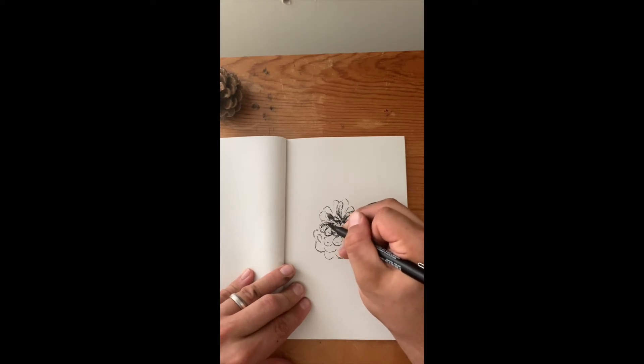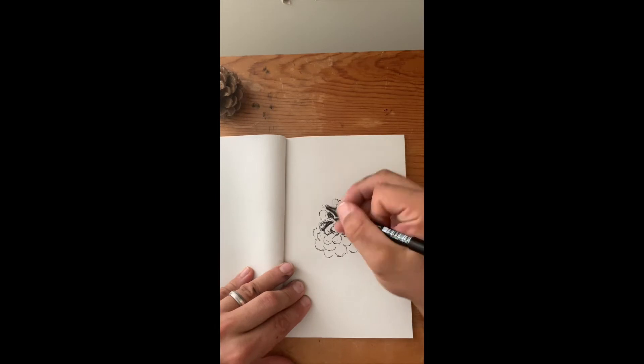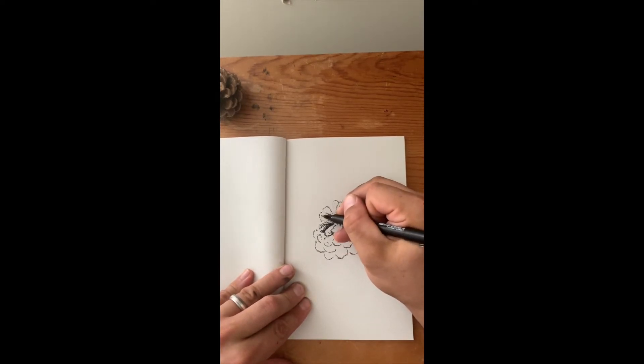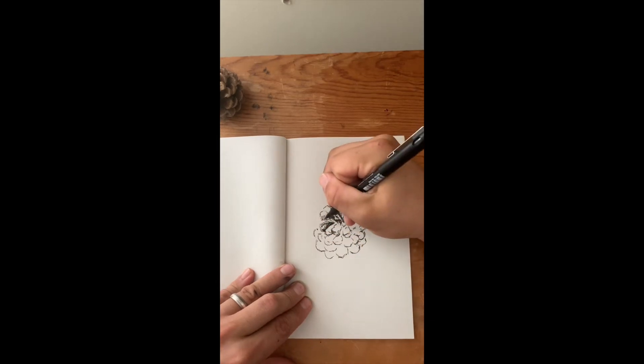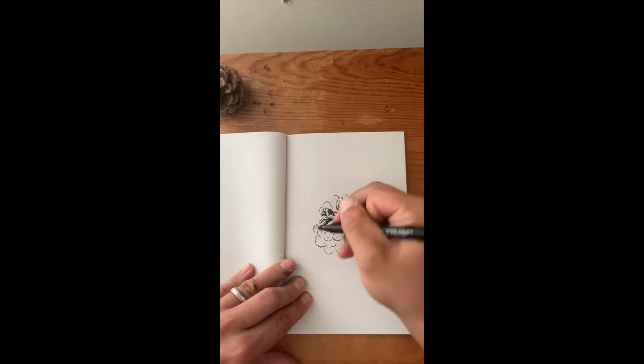And the number one way to do that is to really focus on these values and how they change. So again, doing some directional lines this way. It's a little bit lighter over towards this edge. I'm going to kind of do almost a stippling thing.